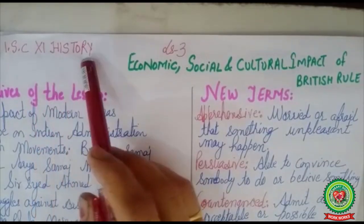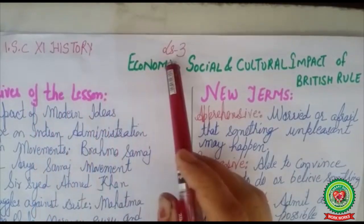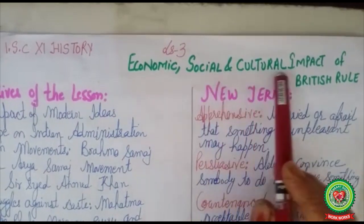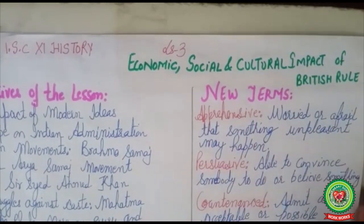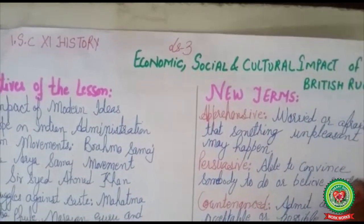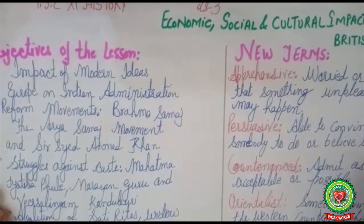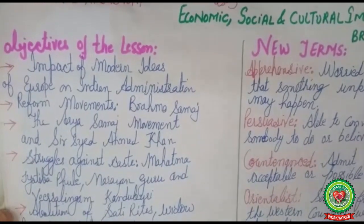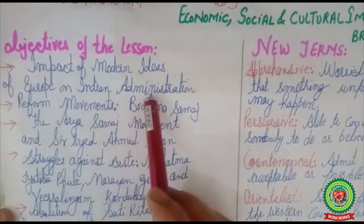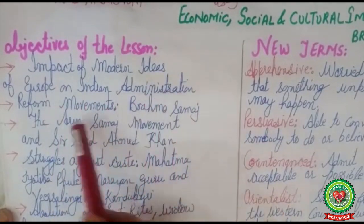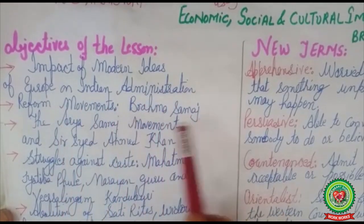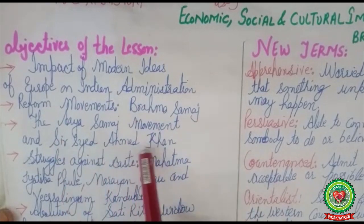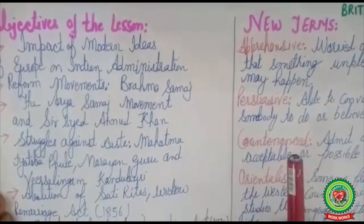Welcome to ISE Plus One History class. We are going to continue Lesson 3: Economic, Social and Cultural Impact of British Rule. Before going through the lesson, we have to understand the objectives. The lesson covers the impact of modern ideas of Europe on Indian administration, reform movements — Brahmo Samaj, the Arya Samaj movement, and Sir Sayyid Ahmed Khan, and struggles against caste.